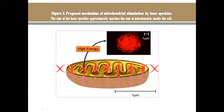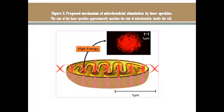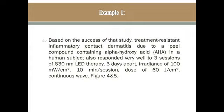As seen in the figure, the laser reaches the mitochondria and stimulates them through standing waves — also called mutual interference patterns or laser speckles — at interfaces of about 1 micrometer. This type of energy released by photon combination at the interface stimulates mitochondria to produce ATP.